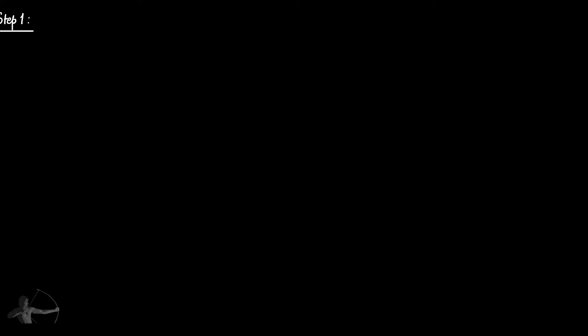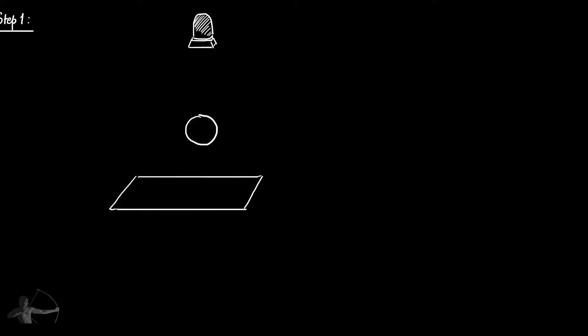Suppose we have a sphere and a plane below it, and the light is placed on top. In order to see the scene from the light's eye, we will render the scene from the light's point of view, just as we usually render the scene from the camera's point of view. What we want from this render is the depth map. In this case, the light will be considered as a camera.